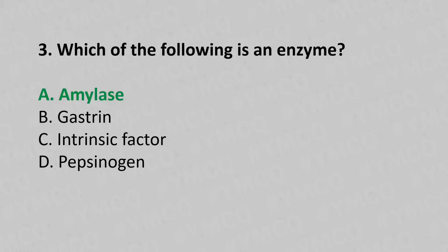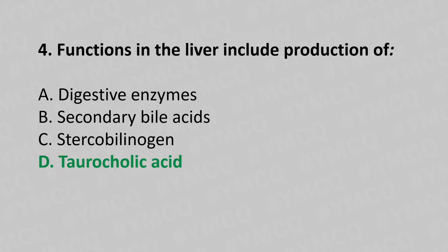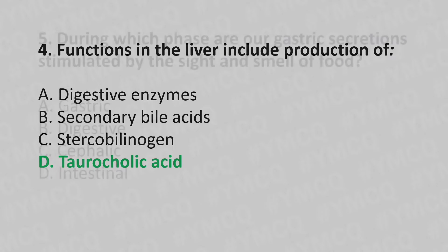Now let's move to question number 4. Functions in the liver include production of: Option A: Digestive Enzyme. Option B: Secondary Bile Acid. Option C: Stercobilinogen. Option D: Taurocholic Acid. And the answer is Option D: Taurocholic Acid.